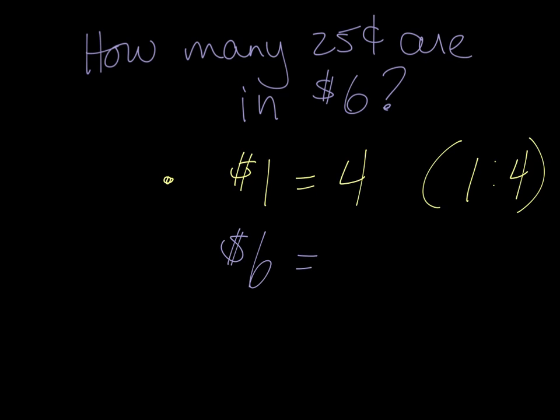And I think, well, six dollars, I'm multiplying by six. Multiply by six. Four times six is twenty-four. So 24 quarters will give me six dollars.